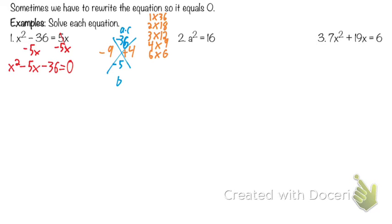Can we use our shortcut here? Yes. So for our shortcut, we make our two parentheses — what starts each parenthesis? X. And how do I end my first parenthesis? Minus 9. And then how do we end our other one? Plus 4. And it's still equal to zero.